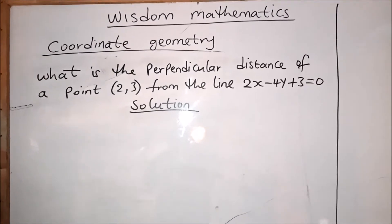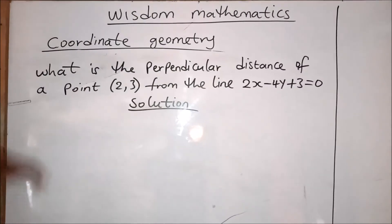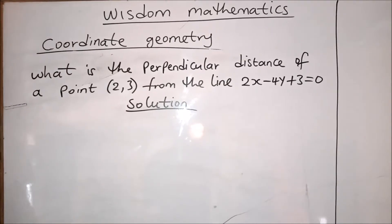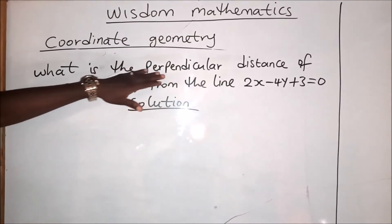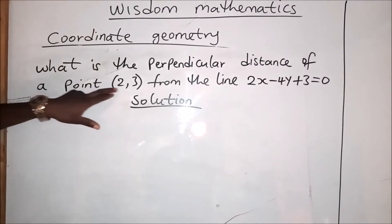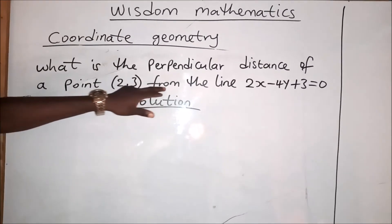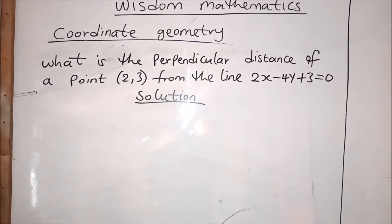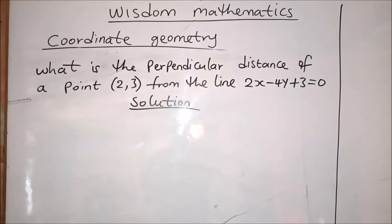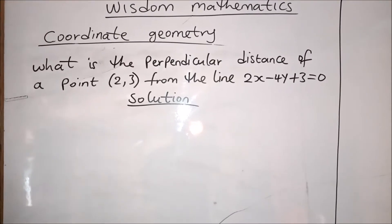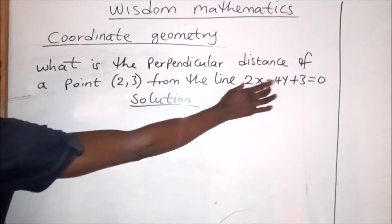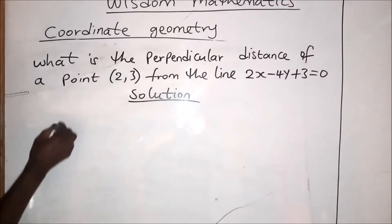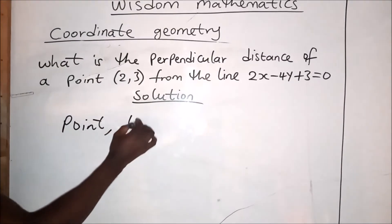Welcome to this episode on Wisdom Mathematics tutorial on coordinate geometry. We have a question which says: what is the perpendicular distance of a point 2 comma 3 from the line 2x minus 4y plus 3 equals 0? We are trying to find the perpendicular distance of this point from this line, so we have two parameters here — one is the point, two is the line.